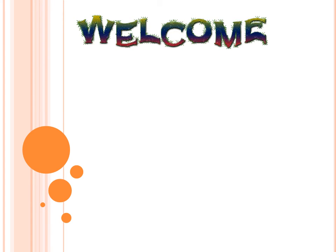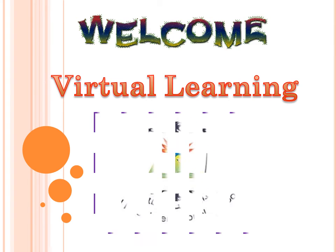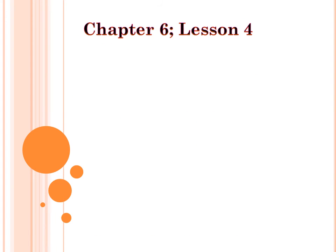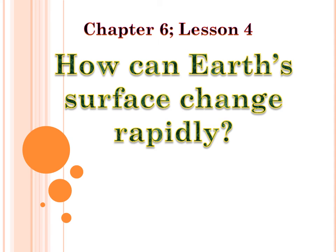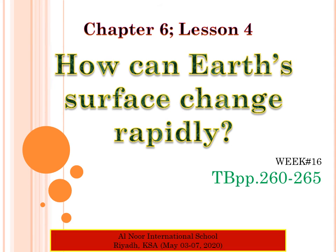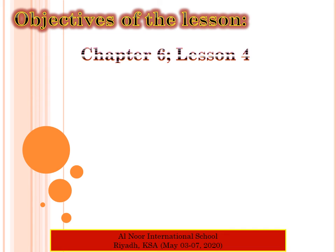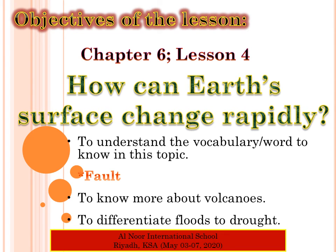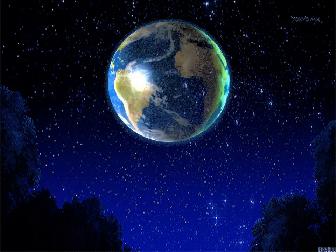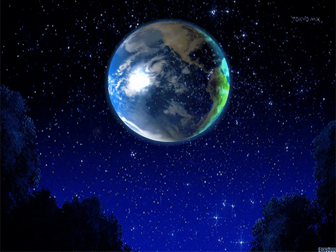Hi all, welcome back to our science class. This week we are reviewing chapter 6 lesson 4 about how can earth's surface change rapidly, textbook pages 260 to 265. The objectives of our lesson are to understand the vocabulary — the word to know in this topic — that is fault, to know more about volcanoes, to differentiate floods and drought.